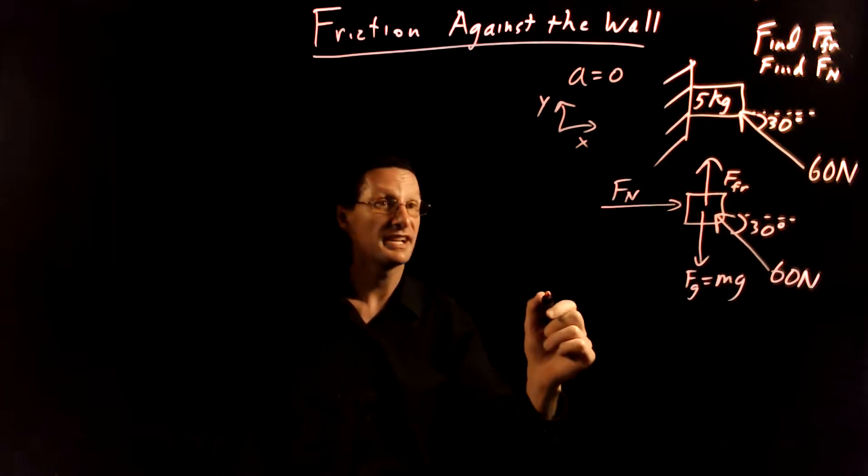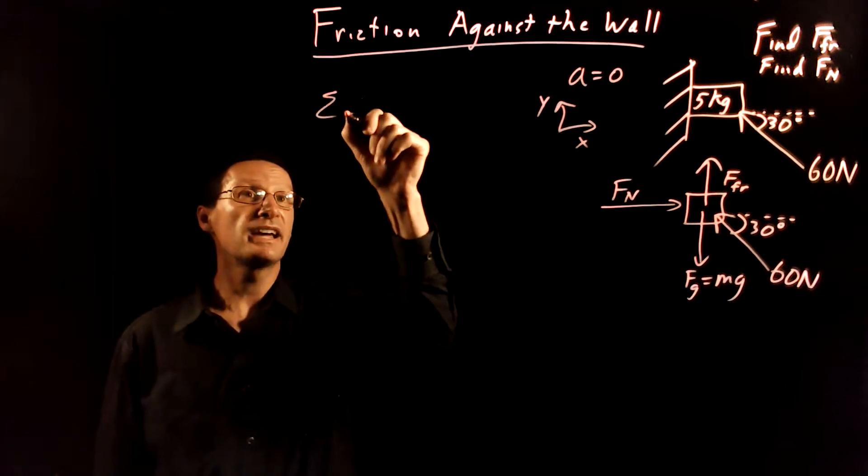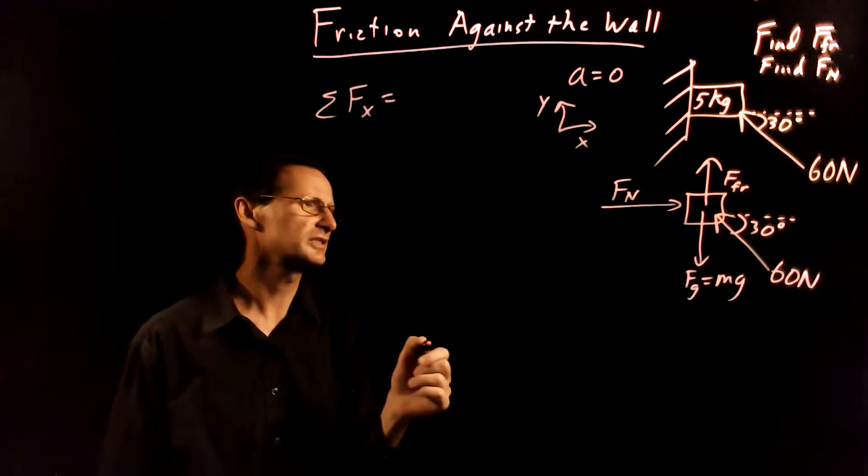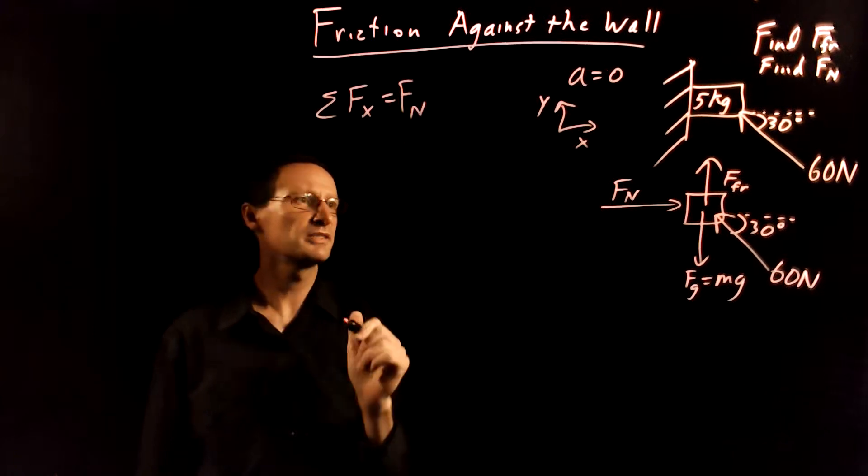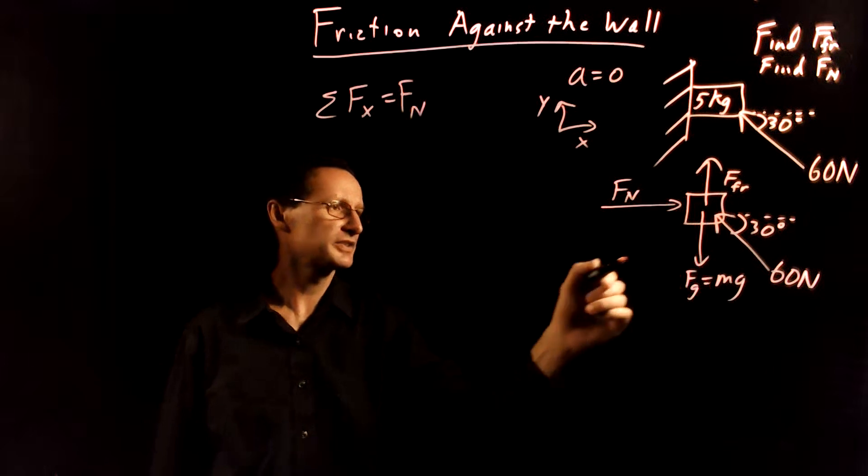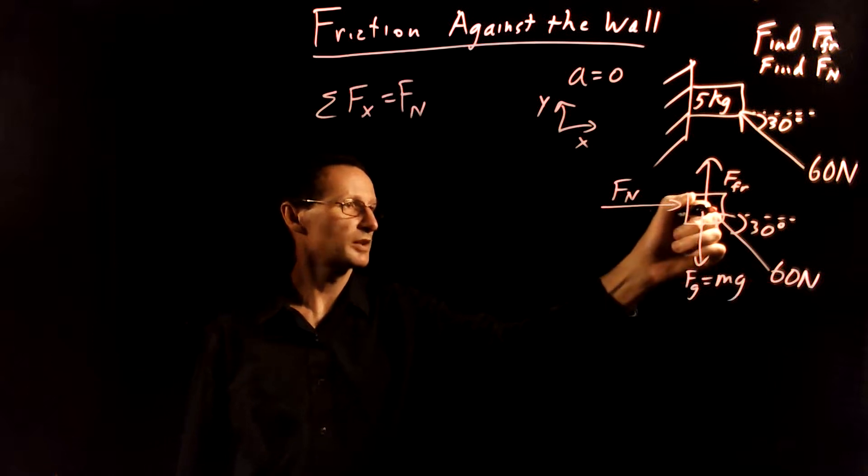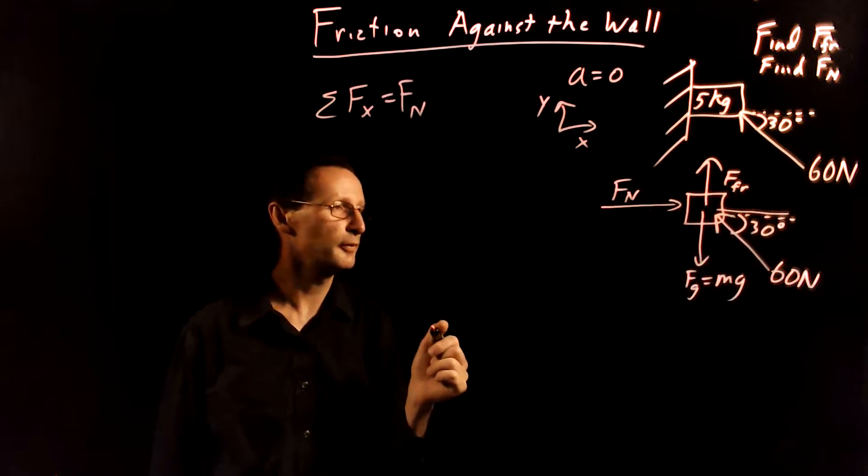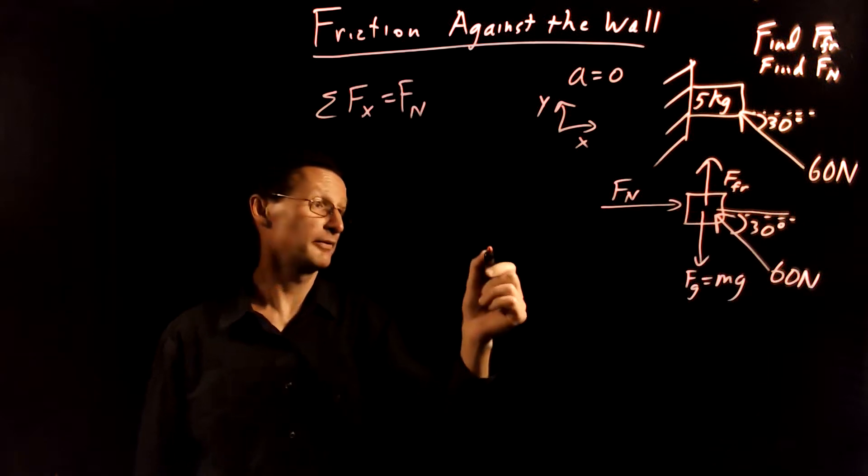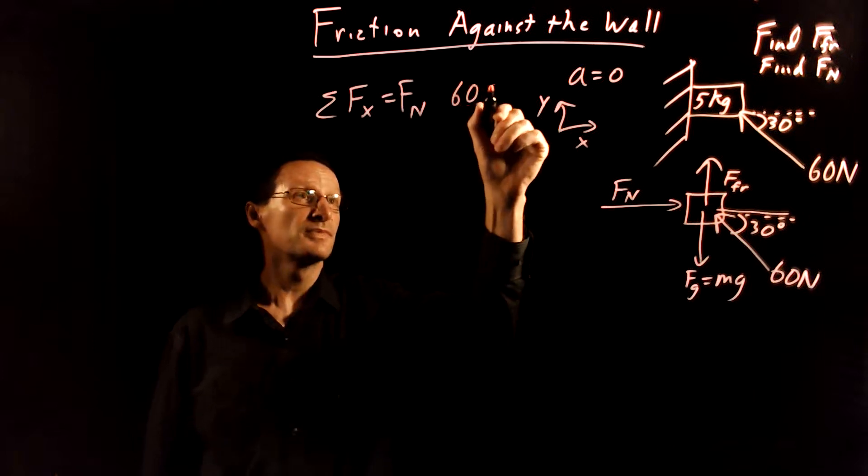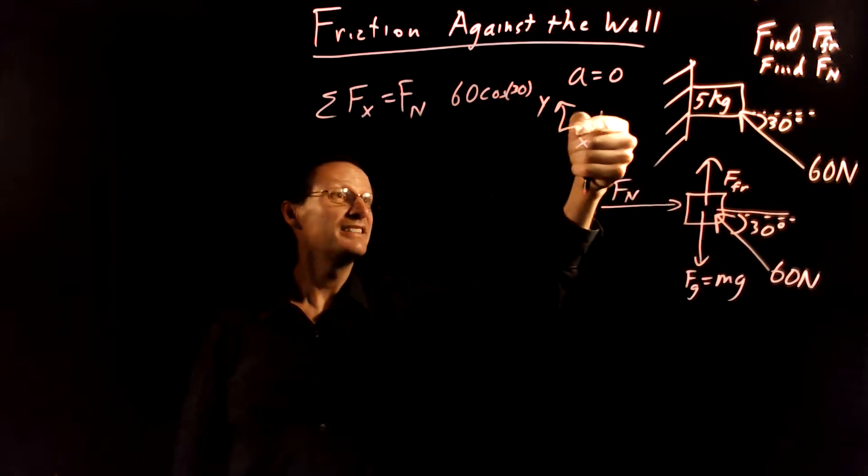And so then the next step we want to do is actually sum the forces in the x and y direction. So let's go ahead and do that. We'll start with the x direction. Let's sum the forces in the x direction and for that we get the normal force is a positive component and then we have friction and gravity are in the y direction. They don't enter into the x direction. We want the horizontal component of the 60 newton force. That horizontal component is adjacent to the 30 degree angle so we want to use cosine for that. So that's going to be 60 cosine of 30 degrees and that points in the negative x direction.